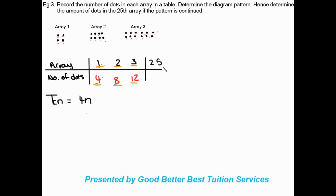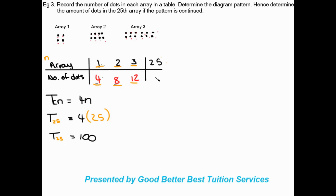They ask for the number of dots in the 25th array. We substitute N = 25 into the rule: T₂₅ = 4 × 25 = 100. So the 25th array contains 100 dots. We've now completed all parts: recorded the table, determined the pattern, and found the 25th array value.